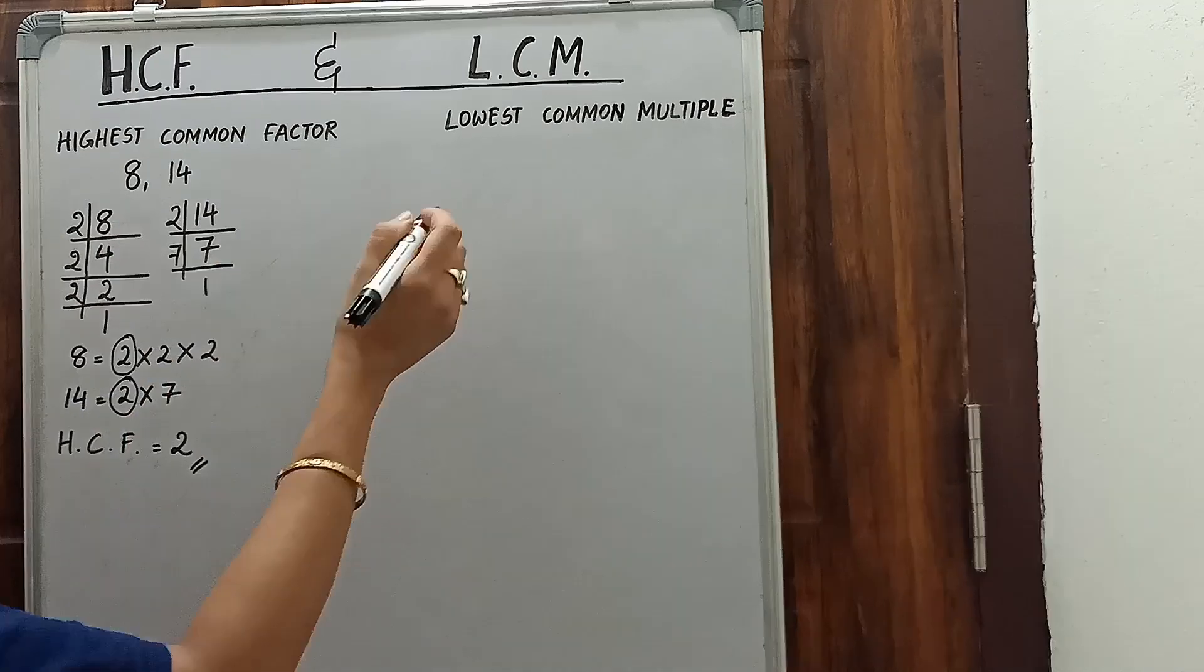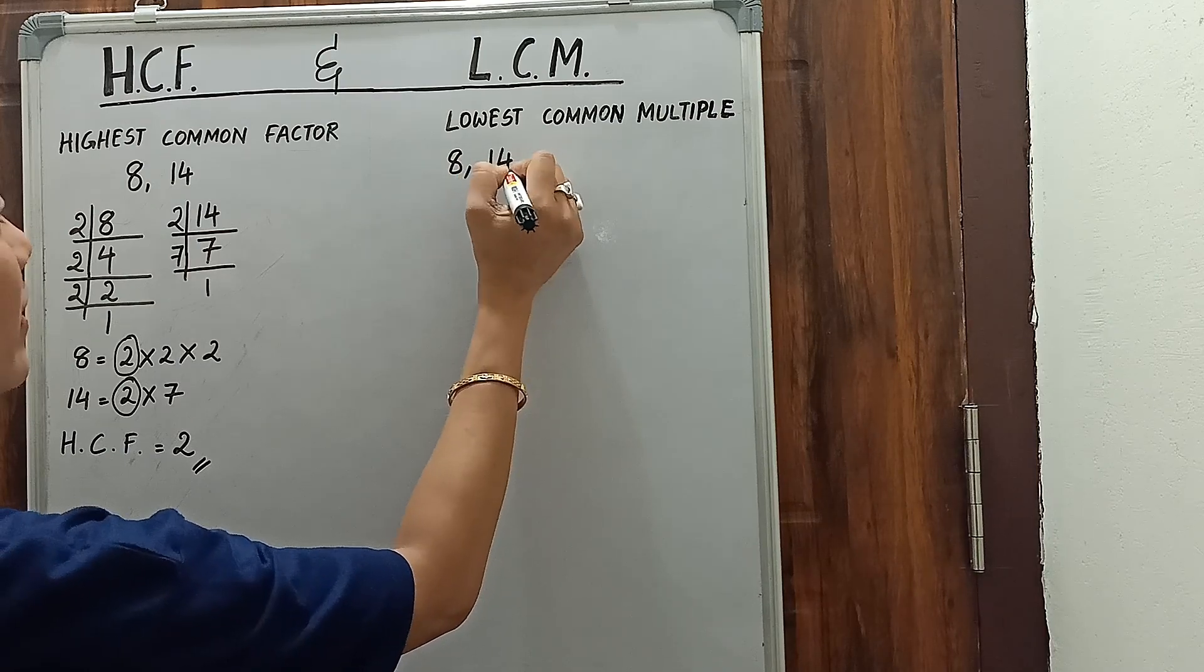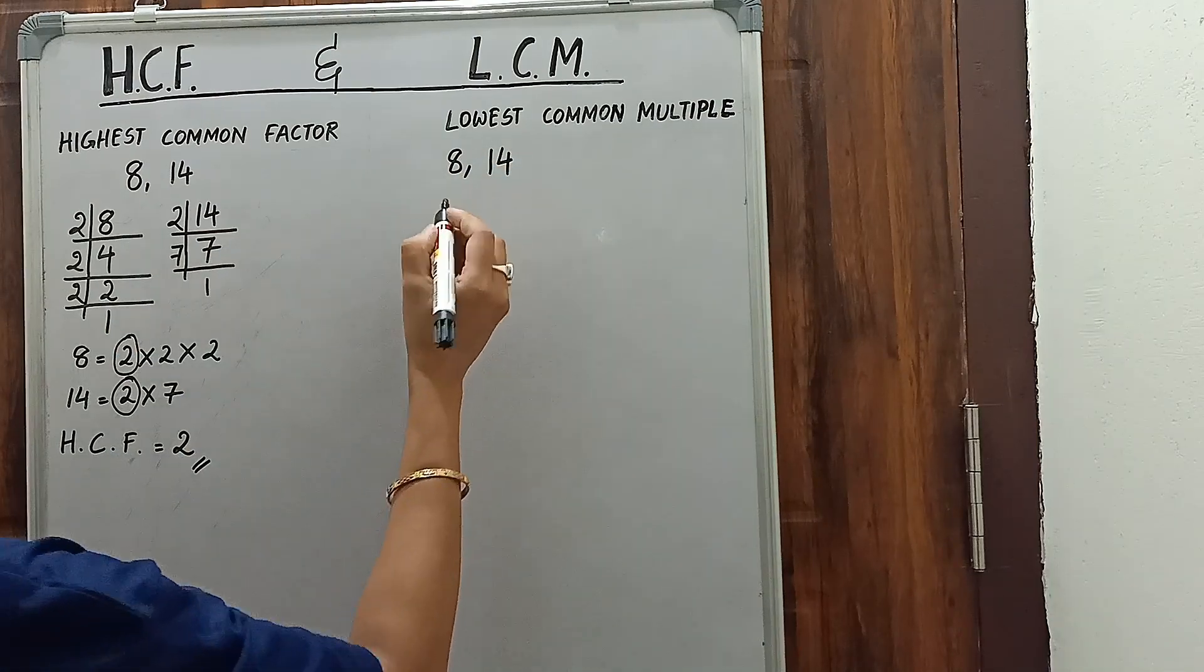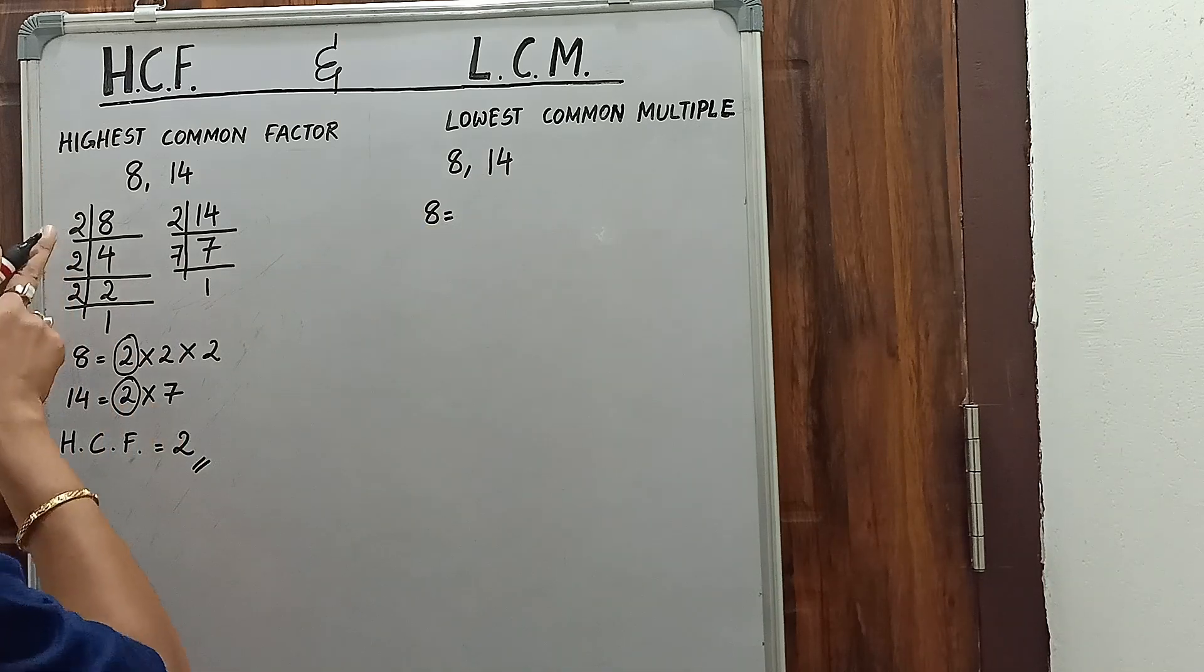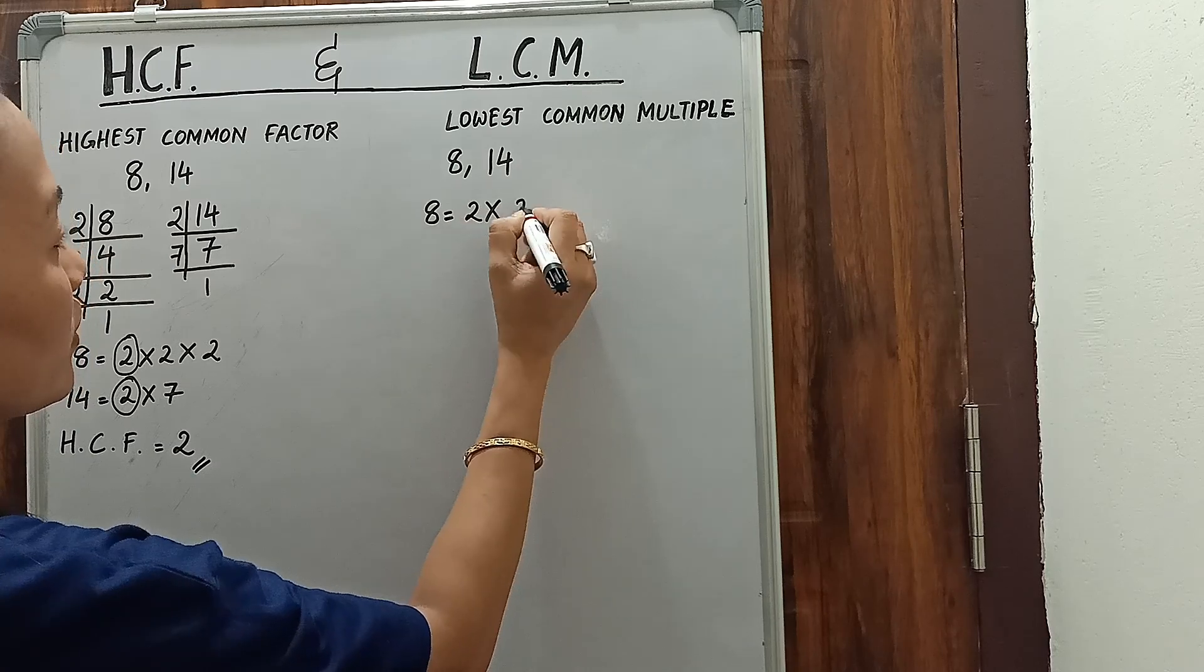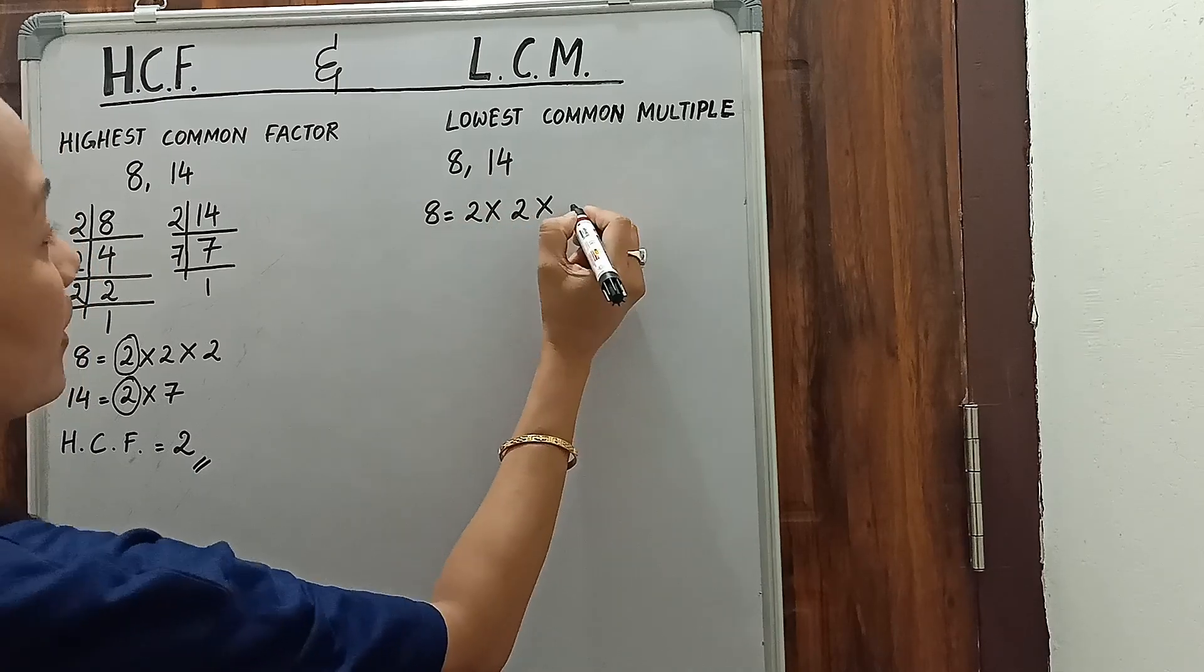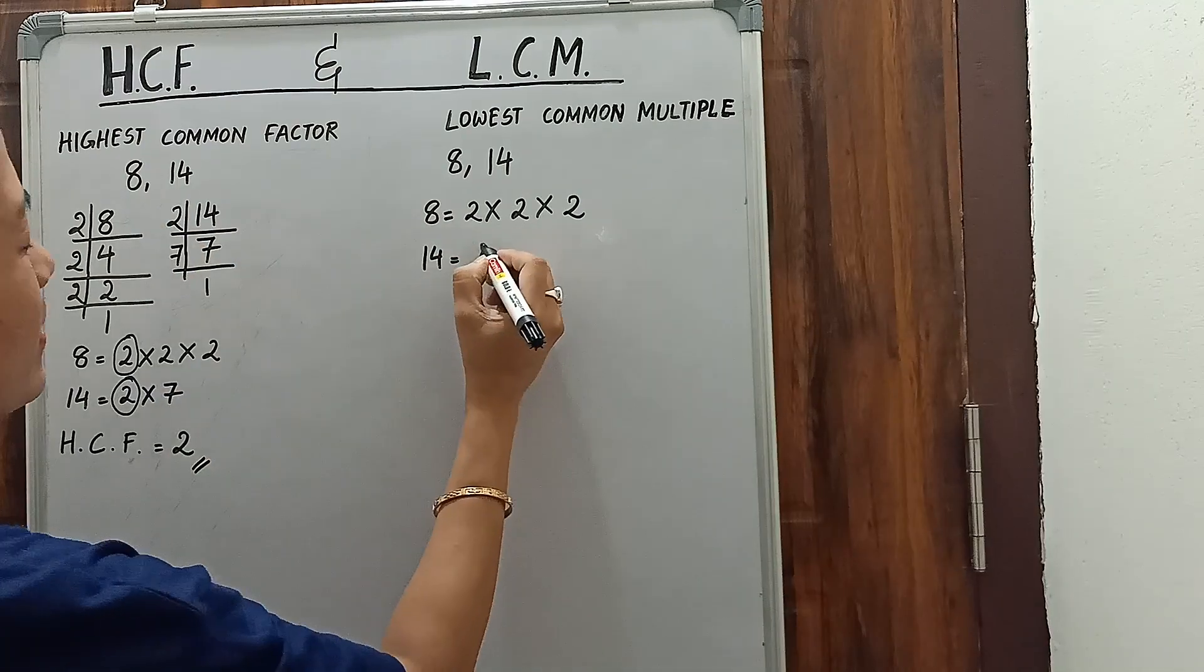Now let's go for LCM. LCM also we will find out in the same way. First of all, let us find out the factors of 8 and 14. For 8, we have already done here, so we will write 2, 2, and 2. The factors of 14 are 2 and 7.